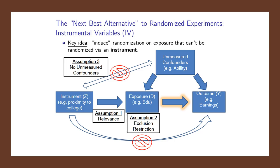Another technique is called instrumental variables. This is perhaps the most used example in the literature, as it was one of the first studies to be utilized in this case scenario. There are three basic assumptions that underlie the use of this method. Researchers are interested in understanding whether educational attainment — the level of education one has — is causally associated with the earnings you will have later in life.